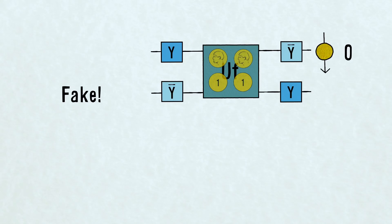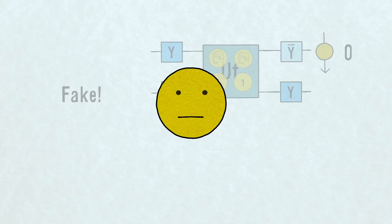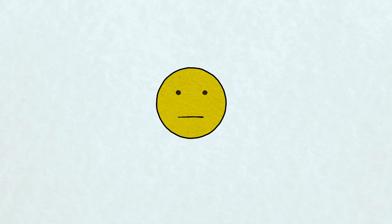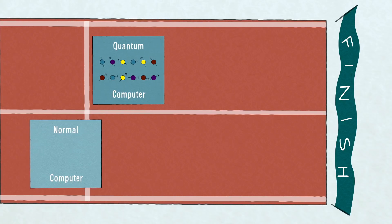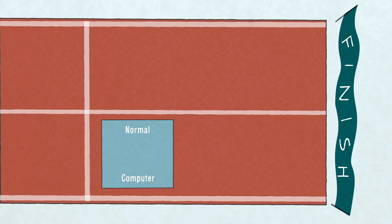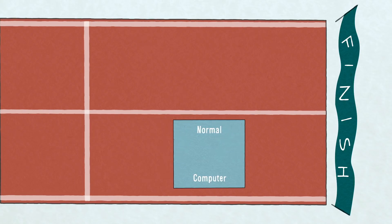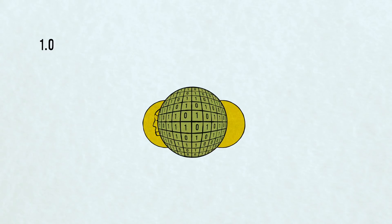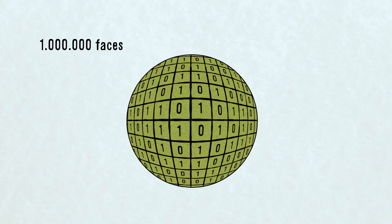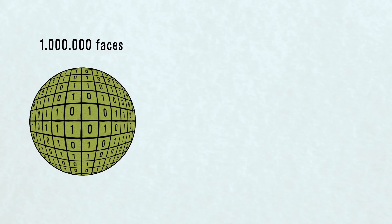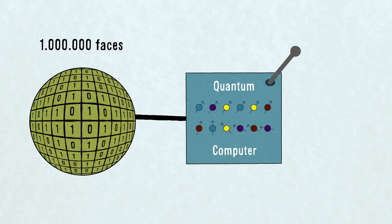Now, to be fair, this is not very impressive, and it's not supposed to be. The algorithm has been invented to show that quantum algorithms can work faster than any classical algorithm when things scale up. If we don't work with a coin with two sides, but a die with a million faces, a quantum computer with enough qubits can still check in one step whether all faces are identical, or whether the faces are half-half, zeros and ones.